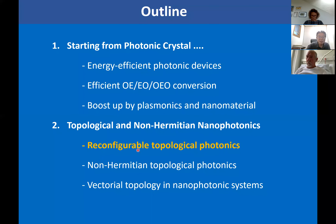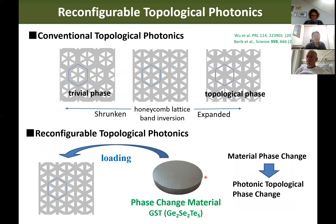Let's start with reconfigurable topological photonics. In the dielectric topological insulator, to realize a topological phase you normally have to change the structure. What we want to do instead is use the same structure but add a phase-change material. As a result of material phase change, we achieve a photonic topological phase change. We found that a particular combination of photonic crystal with a phase-change material like GST works well. GST is a very famous phase-change material that changes from amorphous to crystalline phase with a large refractive index change.